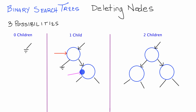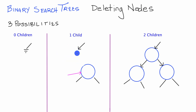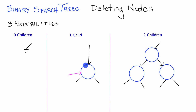Now we have the child node that we want to reattach to the tree marked with a pointer, and we need to make sure that we have a way to access this pointer as well. So once we have everything marked appropriately, we can simply delete this node, and then we'll instruct the pointer that was pointing to the deleted node to now point to the child node. By doing this, we reconnect the tree and retain all of its properties.